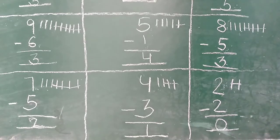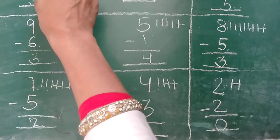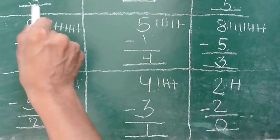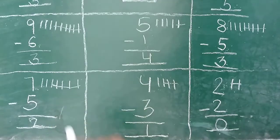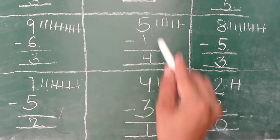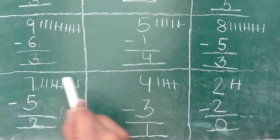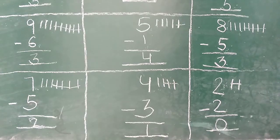Aagaya samaj? Jab upar aur niche same number hote hai, toh sari lines aap cross kar dete hai, aur answer kitna milta hai? Zero. Okay? Is that clear everyone? Any problem? Very good. Toh sabhi bachay kya karenge? Do this work in your notebook, and work should be neat and clean. Jaise maine aap ko yaha proper blocks me number diye hai, aise hi aap ko ek block me ye number likhna hai, uske baad yeh likhna hai, aur third block me lines draw karke answer likhna hai. Ek page me ek line me three sums karne hai, fir beech me scale se line khichenge. Three sums karne hai ek side, aur uske baad usi side me fir three sums karne hai.